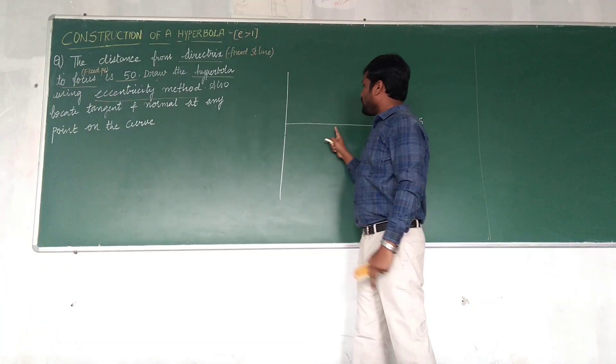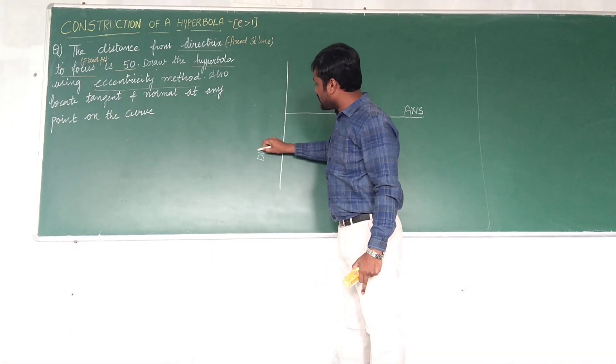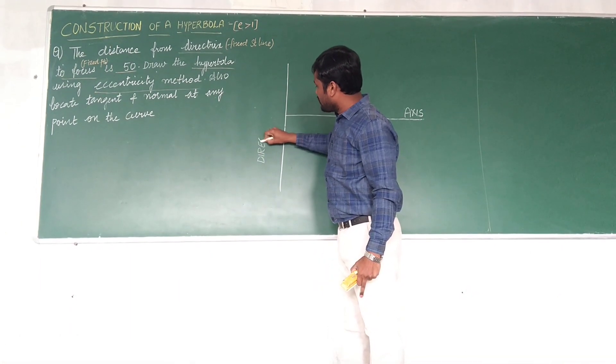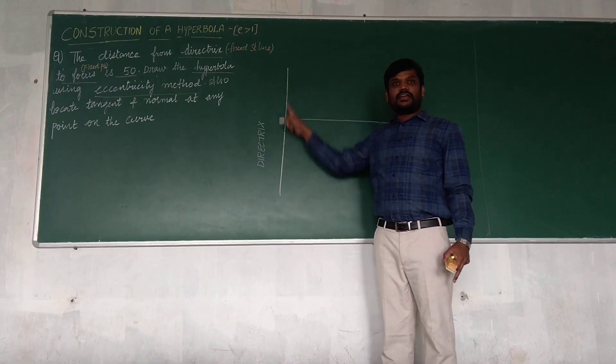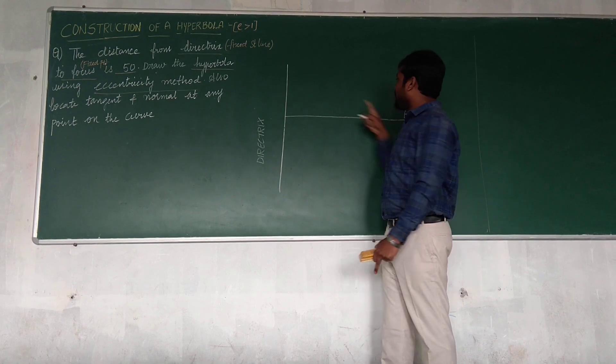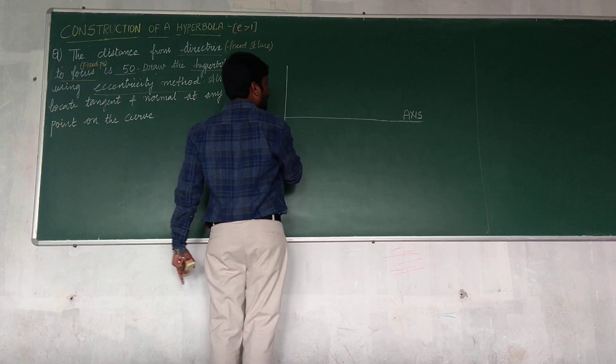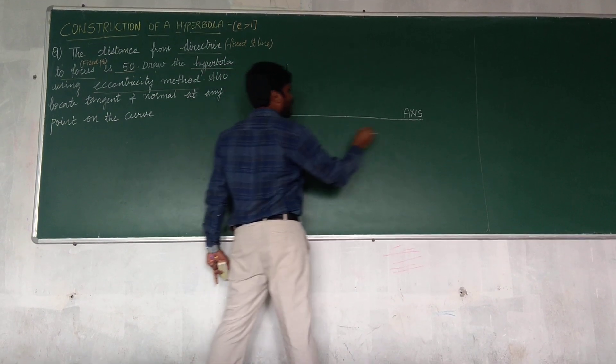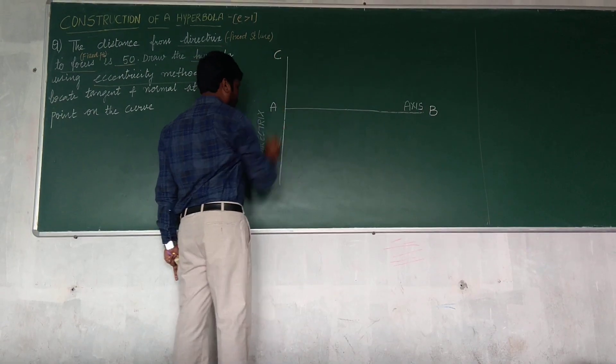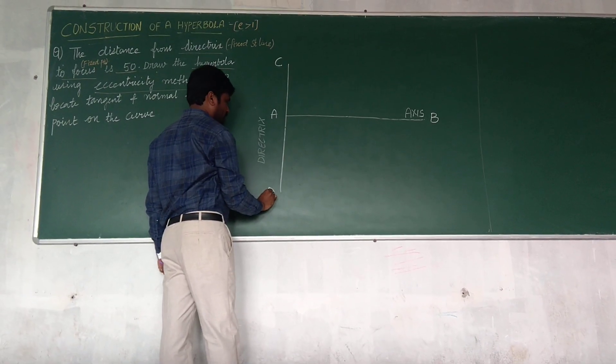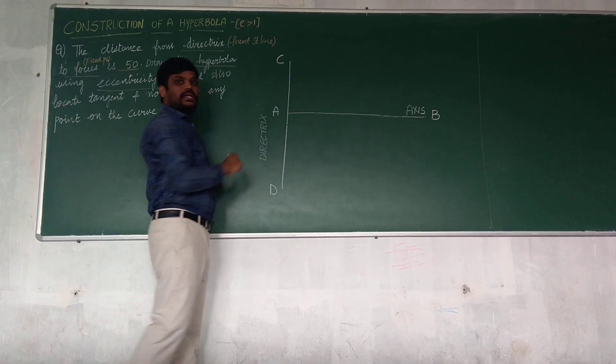On axis, we need to locate focus, I mean fixed point. And this is called as directrix. This directrix is otherwise called as fixed straight line. Line perpendicular to directrix is nothing but axis. Now let me give an aim to this. Let this be A and B from C as well as D.